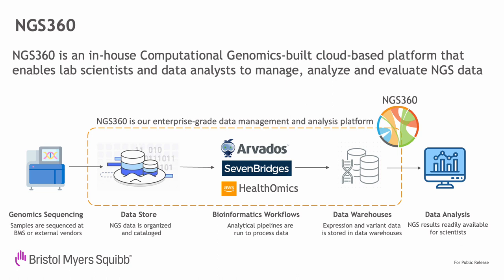NGS360 is able to ingest data from various sources, including in-house sequencers, public repositories, and vendors who perform sequencing for us. All this data is captured in our data store and catalogued as part of projects. At this point, scientists can run workflows with a few mouse clicks or using API calls. NGS360 enables workflows to be executed using various workflow engines such as Arvados, Seven Bridges, and hopefully soon AWS Healthomics. Once data is processed, we load analysis results into a suite of data warehouses where scientists can pull results for downstream analysis.